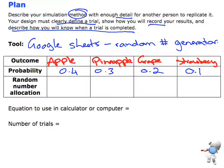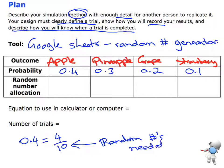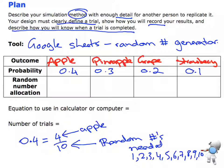Now I need to decide on the random number allocation. If I take the decimal 0.4, that is the same as four out of ten. So for the apple symbol, I need a total of ten random numbers. Apple needs four of those, so I need to allocate four numbers to the apple category. Generating numbers one through ten, I'll take the first four — so apple gets numbers 1, 2, 3, and 4.